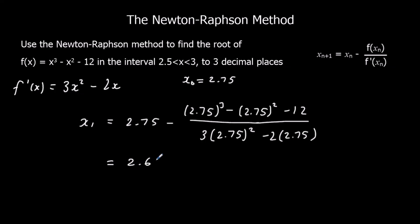We're going to change the 2.75 into ans. That gives me answer minus answer³, minus answer², minus 12, over 3 answer², minus 2 answer. All the 2.75s change into answer. And press equals. I've got 2.67589, and so on.